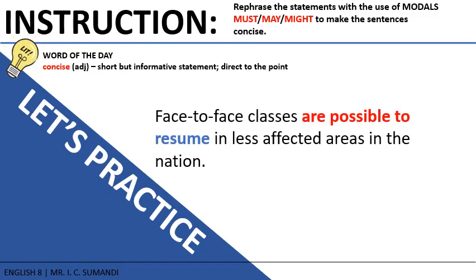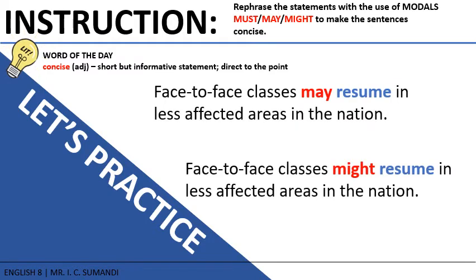Next: 'Face-to-face classes are possible to resume in less affected areas in the nation.' Since we are talking about possibility, we can use both may and might depending on how sure we are. So: 'Face-to-face classes may resume in less affected areas in the nation,' or 'Face-to-face classes might resume in less affected areas in the nation.'